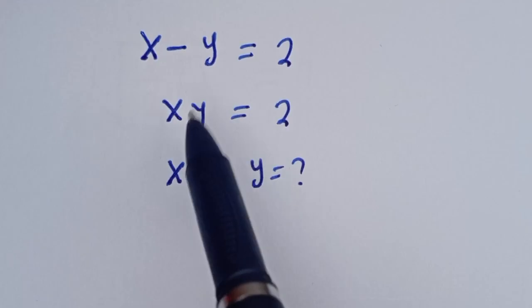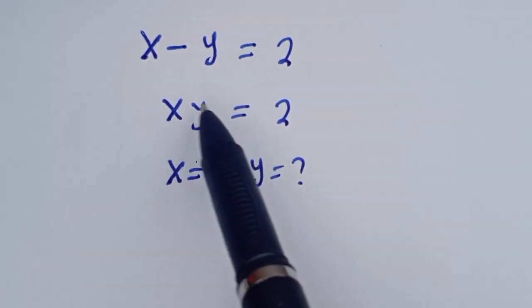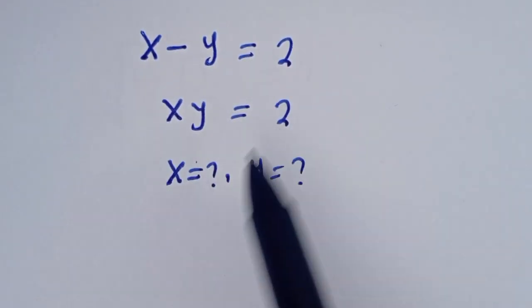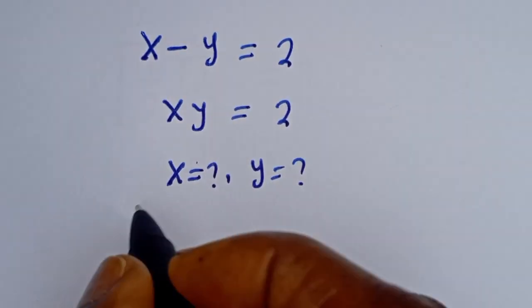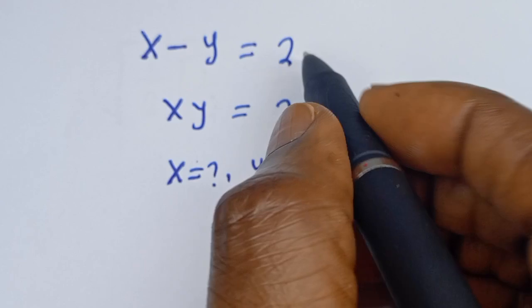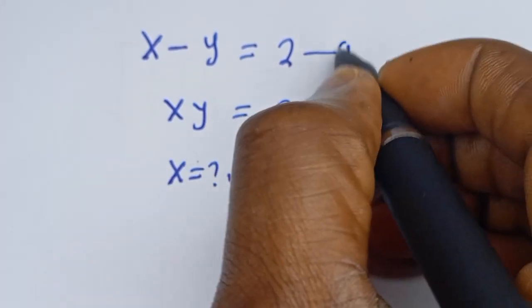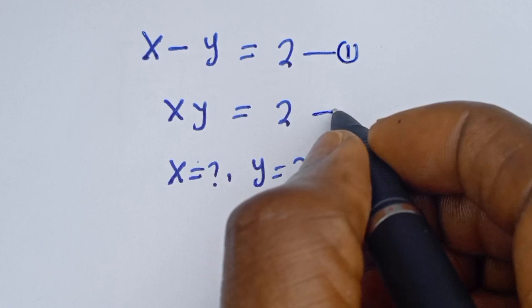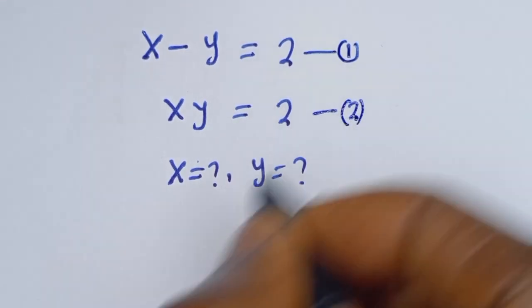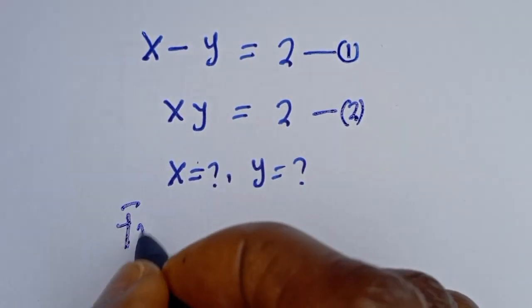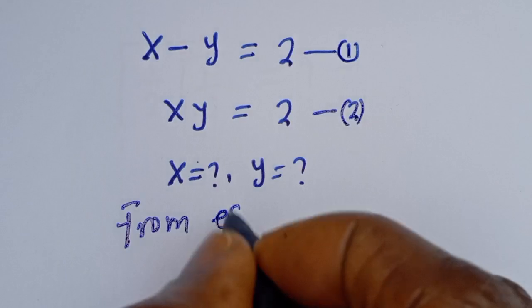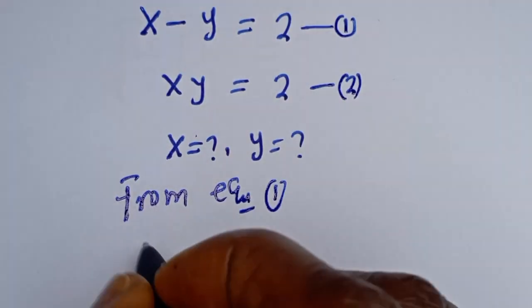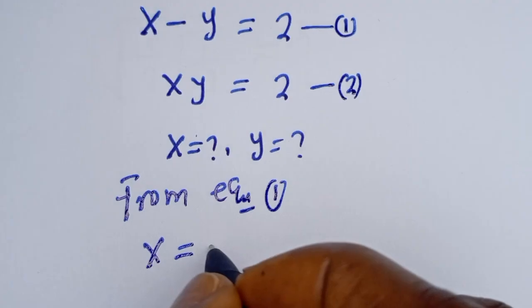How to solve for x and y in this algebra equation: x minus y is equal to 2 — let's call this equation 1 — and x times y is equal to 2 — let's call this equation 2.